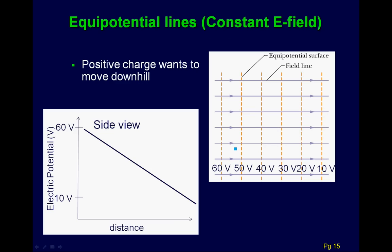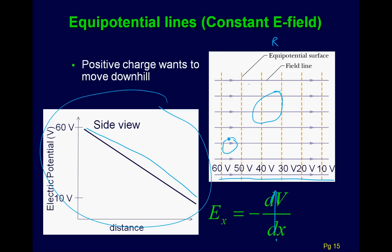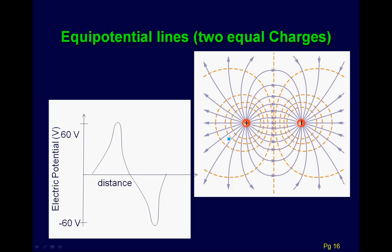Here are a couple of quick pictures. On the right, you have equipotential lines and electric field lines set up for a capacitor — decreasing 60, 50, 40. Looking at this from the side, you see the potential steadily decreasing. Between the capacitor plates the electric field is constant, the lines have equal spacing, and the potential decreases linearly. Again, the field points downhill.